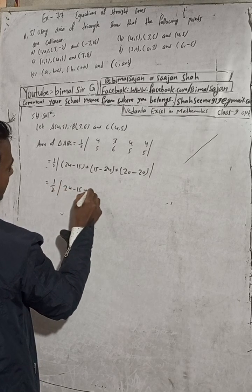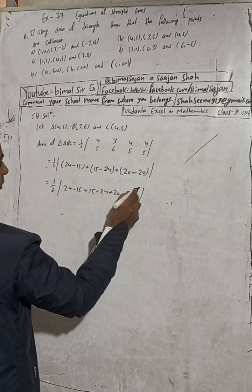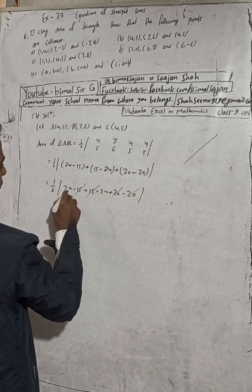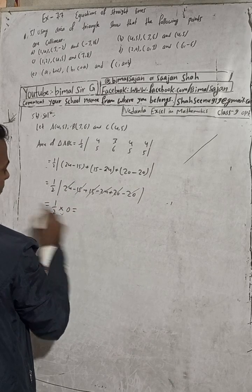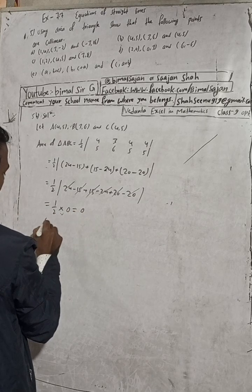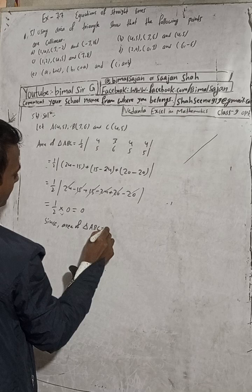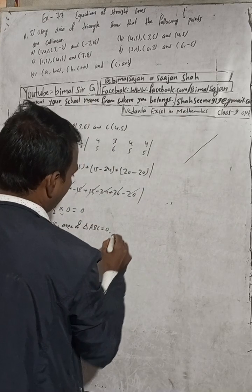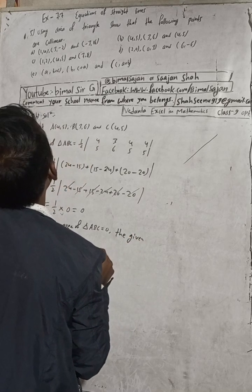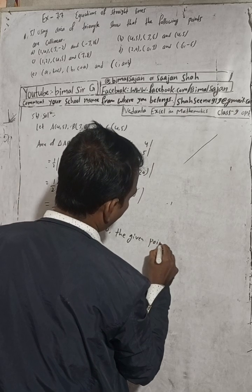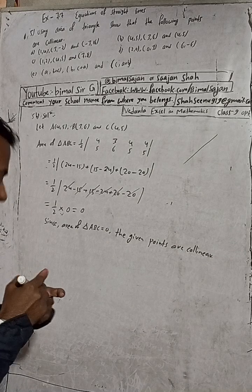We get 1/2 times |24 minus 20, then 20; 24 plus 20 minus 20|. We can see plus 20 minus 20 cancels, minus 50 plus 50 cancels, and plus 24 minus 24 cancels — so the total is 1/2 into 0, which is 0. Since area of triangle ABC equals 0, the given points are collinear.